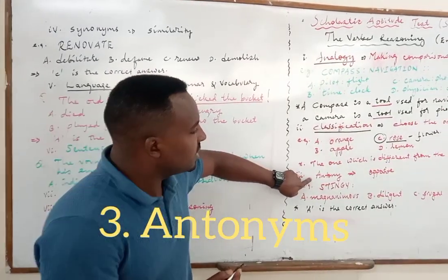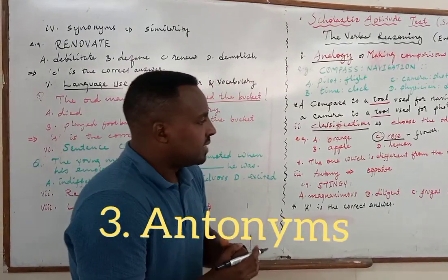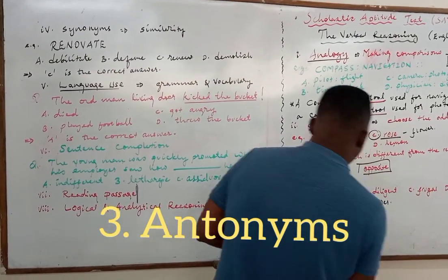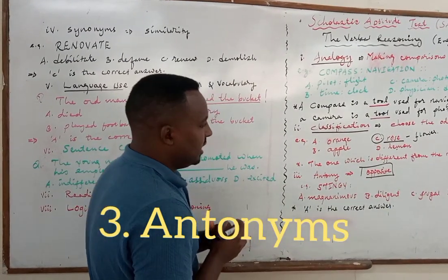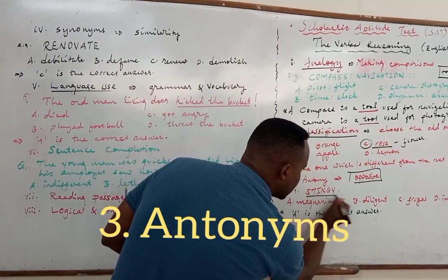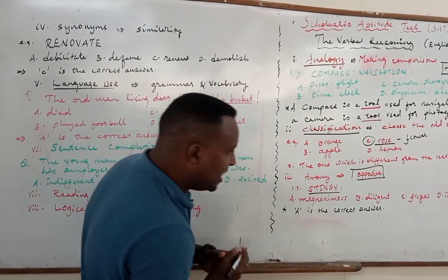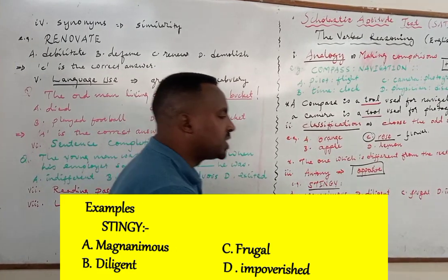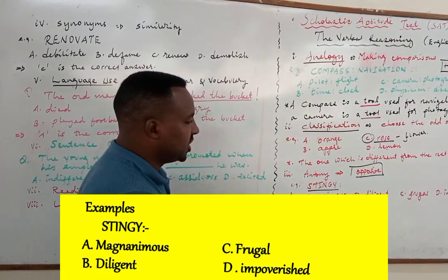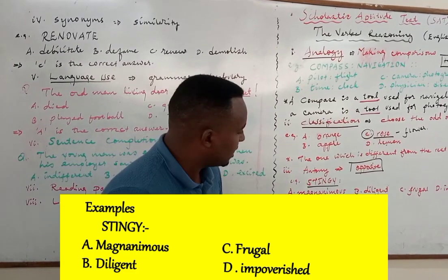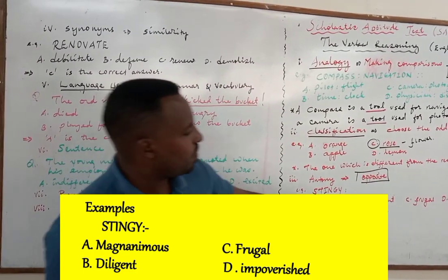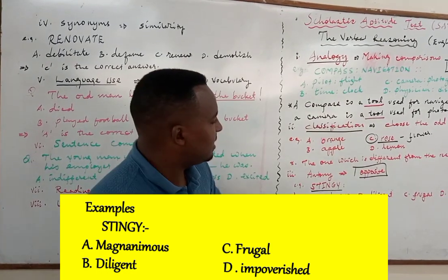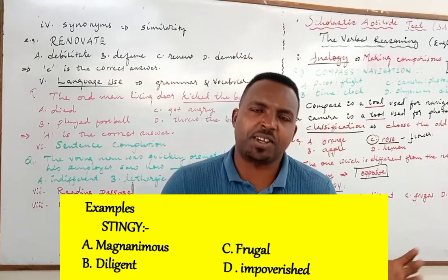The next section is antonym. Antonym refers to opposites — words that are opposite in meaning. You'll be given a word in block letters, like STINGY, and you are expected to find the option which is opposite to stingy. The options are: magnanimous, diligent, frugal, impoverished. Stingy means miserly.